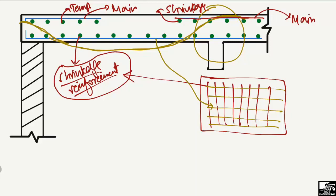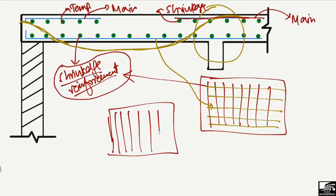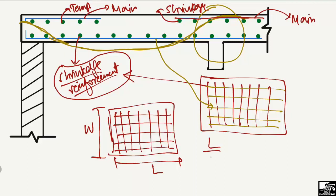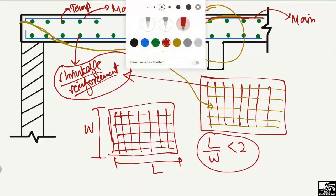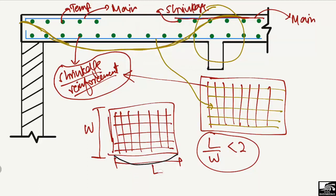In a two-way slab, we provide the main reinforcement in both directions. If the ratio of the length to the width of the slab is less than two, it is considered a two-way slab. We must provide the main reinforcement in both directions in order to resist the bending moment that occurs in both directions.